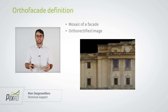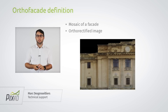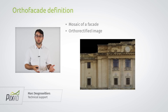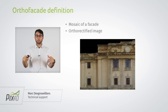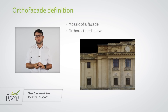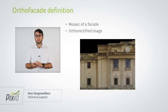What do we mean by orthofaçade? It's an ortho-rectified image of the façade of a building or any other object in your project which is more or less planar. This is a concept which is going to be familiar to you if you know what an orthomosaic is. If you don't know what an orthomosaic is, I encourage you to have a look at one of our other videos where we talk about the mosaic editor. Basically, your orthomosaic is going to be generated always from the top down, whereas the orthofaçade gives you the possibility to change this orientation — so to generate the orthomosaic of the façade of a building, you're going to be able to change the orientation by inserting an orthoplane object in your project.